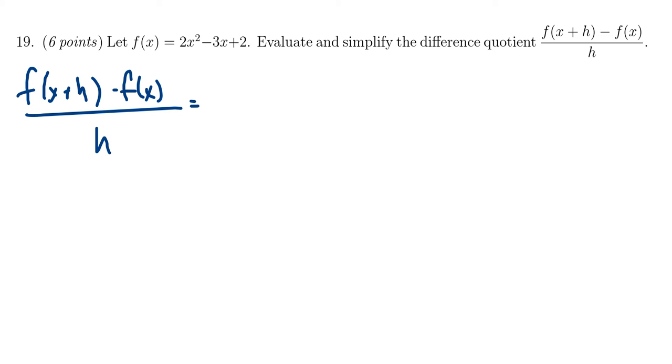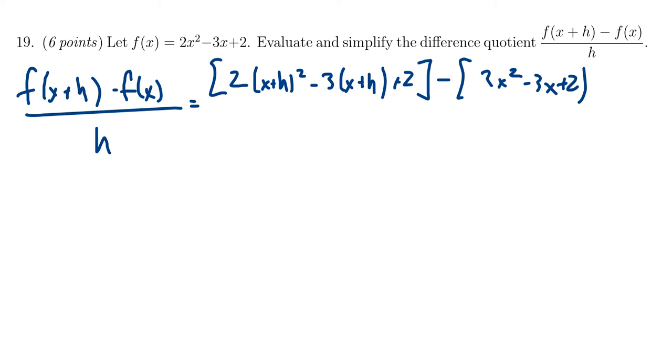So we have to evaluate f of x plus h. That means everywhere we see an x in the original formula we have to replace it with an x plus h. So we get 2 times x plus h squared minus 3 times x plus h plus 2. Then we subtract from it f of x so we just put down the original formula 2x squared minus 3x plus 2. This all sits above the h from before.